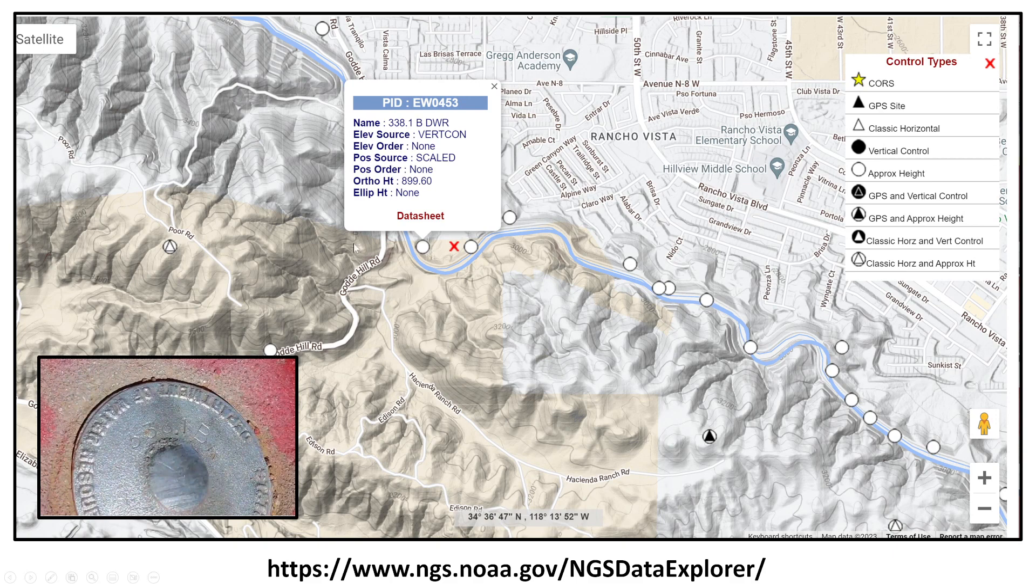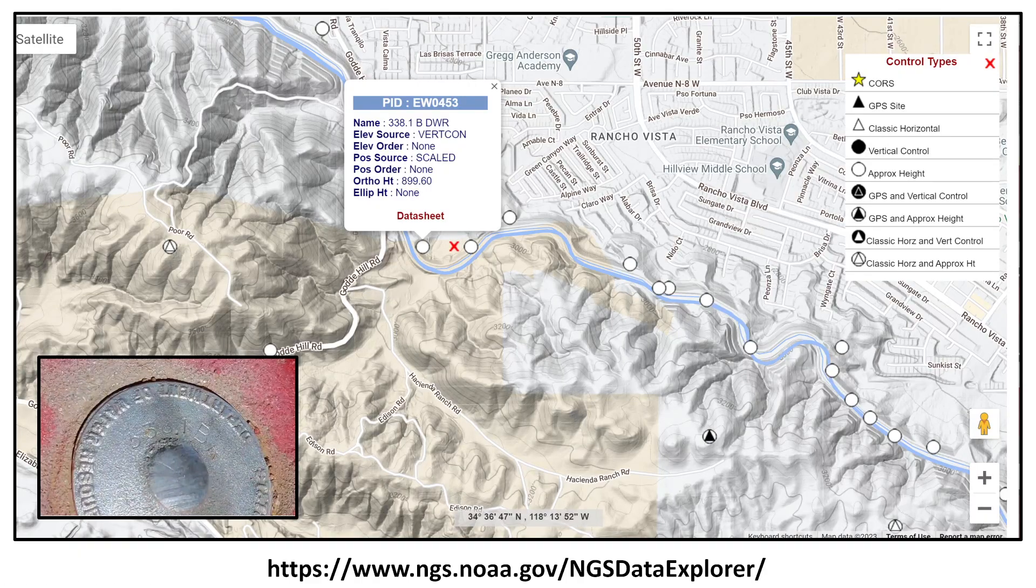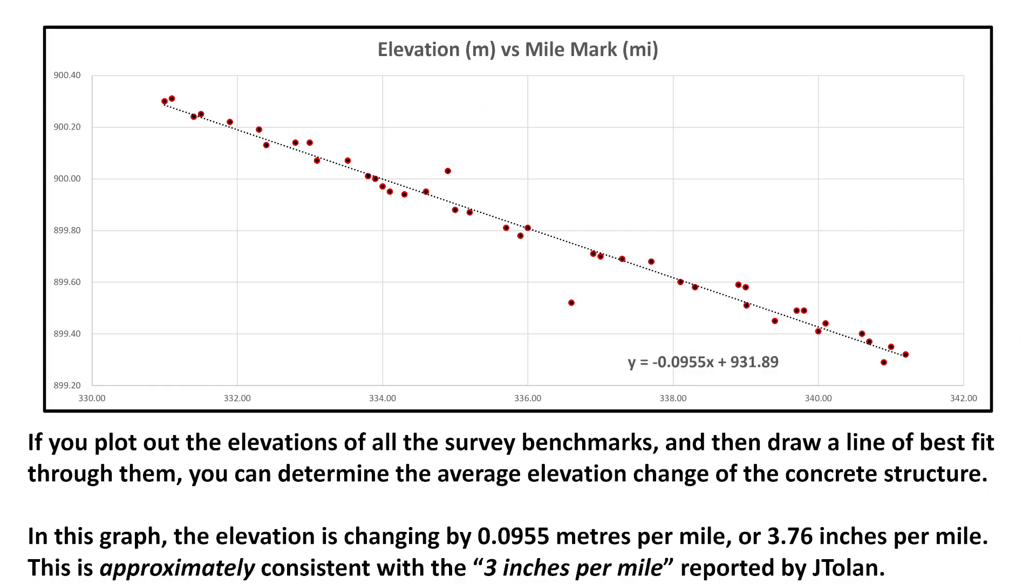Anyway, we can log on to the National Geodetic Survey website and find the exact benchmark he's looking at. And we see it's 899.60 meters above sea level. In fact, we can pretty easily get the elevations of all the survey benchmarks along this stretch of the aqueduct. And if we plot them out in Excel, and then draw a line of best fit through them, you can get an average elevation change of the concrete structure itself. And you can see on the graph that the elevation is changing by 0.0955 meters per mile, or convert it to freedom units. That's 3.76 inches per mile. And that's approximately consistent with the three inches per mile reported by Jay Tolan.